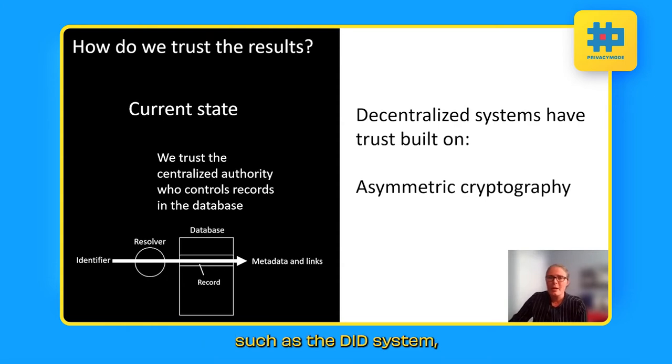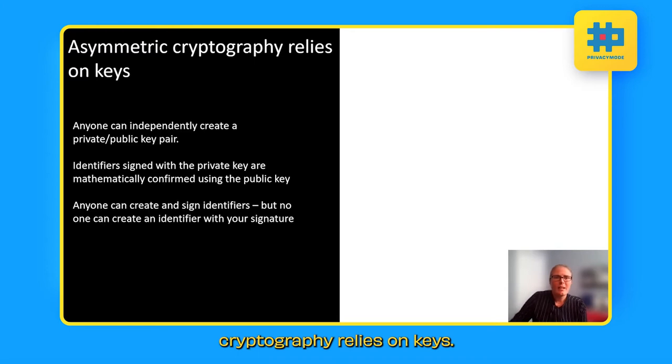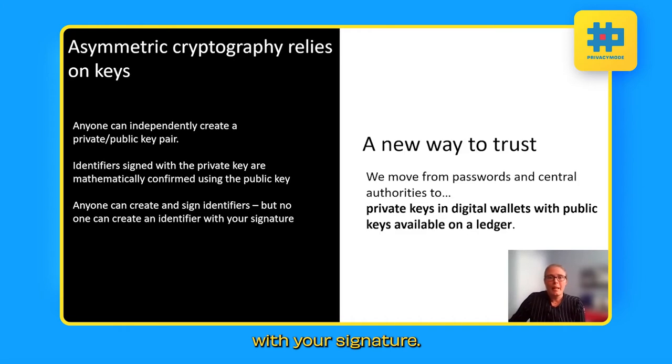Now, in decentralized systems such as the DID system, we have trust that's built on asymmetric cryptography. So asymmetric cryptography relies on keys. Anyone can independently create a private slash public key pair. And then when you sign an identifier with a private key, you can mathematically confirm that signature using the public key that's available. So conceivably, anyone can create and sign identifiers, but no one can create an identifier with your signature. So we have a new way to trust. So we're moving beyond the idea of passwords and central authorities who do the vetting to private keys in digital wallets with the public keys that are available on the ledger.